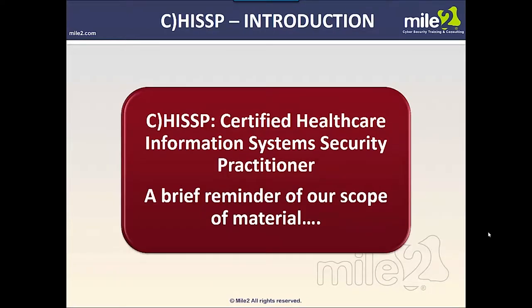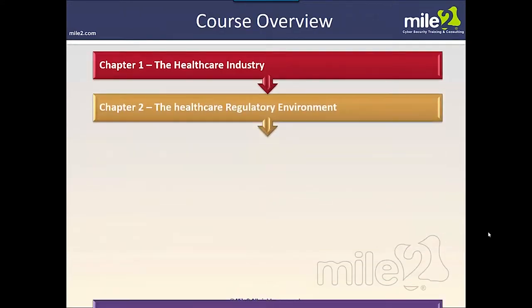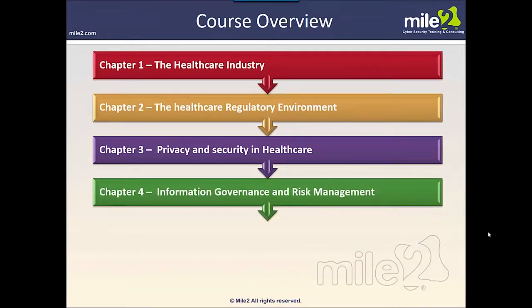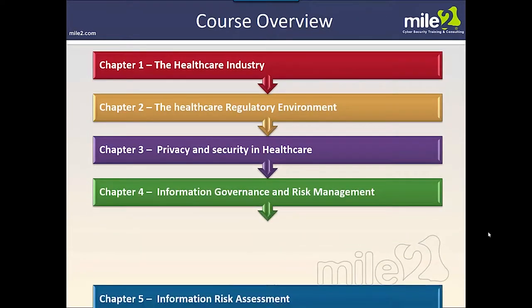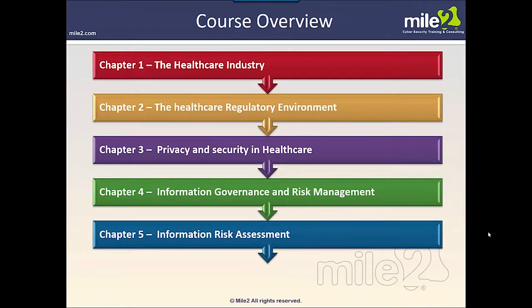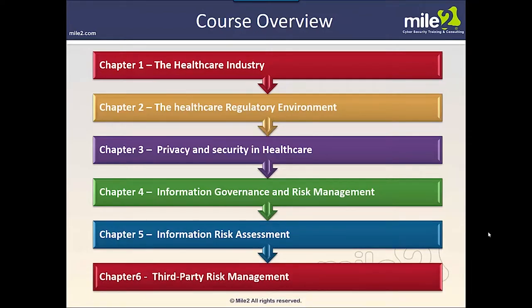Hopefully we will give you an opportunity to do a cross-correlation between this course and the scope of knowledge provided by the CISSP designation, allowing you to take that collateral and shift it onto healthcare-related matters as a specialty area. The Certified Healthcare Information System Security Practitioner is a different spin on information security as traditionally thought of through the CISSP lens. A brief reminder of the scope of material: healthcare industry, regulatory environment, privacy and security focus, information governance, risk management, compliance, information risk assessment, and a look at third parties and the vendor community.